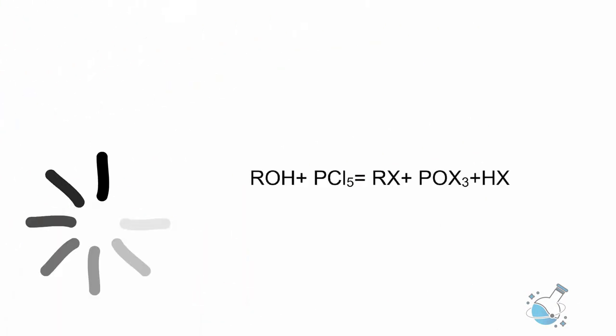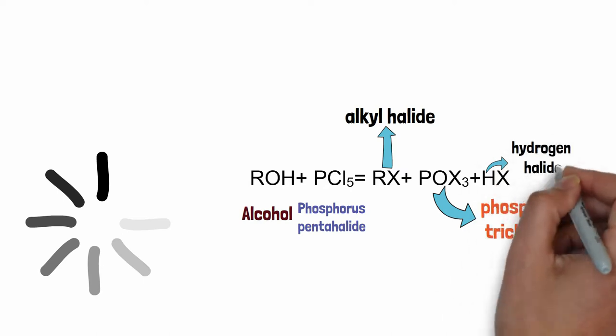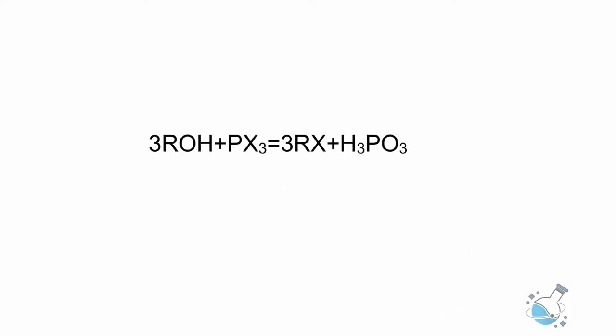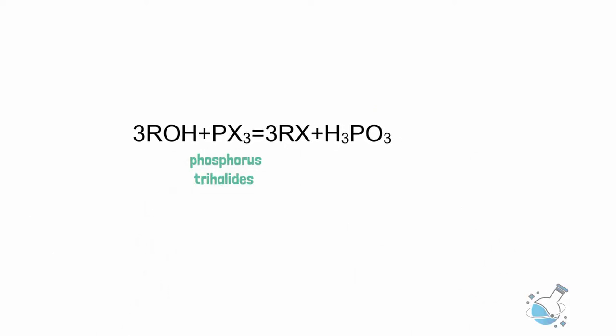Phosphorus pentahalide also reacts with alcohol to give alkyl halide, phosphoryl trichloride and hydrogen halide as products. Again, phosphorous trihalides can react with alcohols and produce alkyl halides, only difference being this time there is no phosphoryl halide or hydrogen halide produced, but there is phosphorous acid.